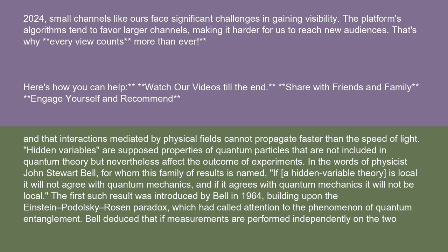Hidden variables are supposed properties of quantum particles that are not included in quantum theory, but nevertheless affect the outcome of experiments. In the words of physicist John Stuart Bell, for whom this family of results is named: if a hidden variable theory is local, it will not agree with quantum mechanics, and if it agrees with quantum mechanics, it will not be local.